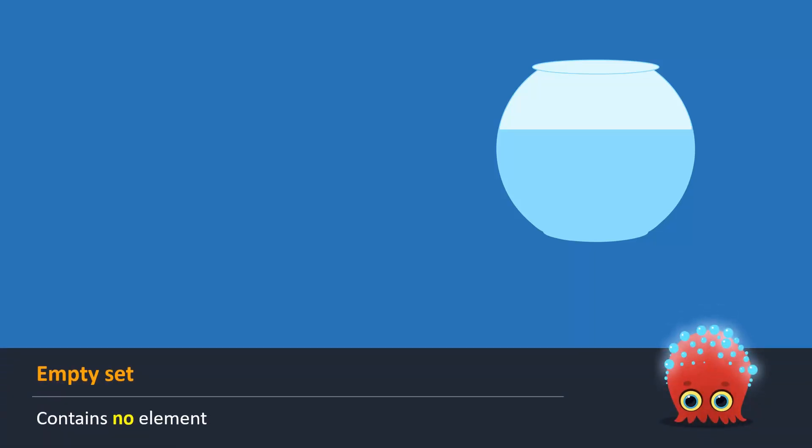An empty set is also called a null or void set. An empty set is represented by empty braces or by a Greek letter which is called phi. So, phi is equal to empty braces.